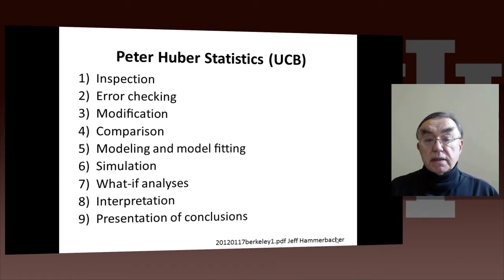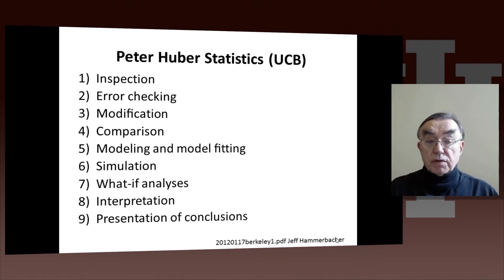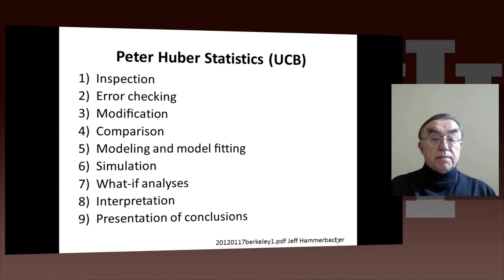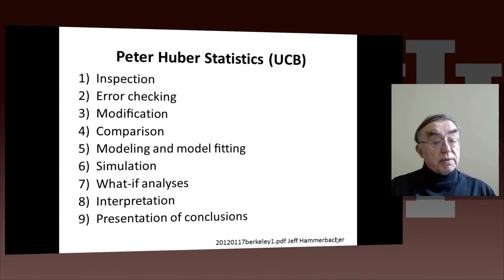Here's Peter Hubler, another statistics person from Berkeley. You need to inspect the data and curate it — that's error checking. Data is always full of errors, and you need to check as much as possible that there are no errors that will cause you to get the wrong answer. You need fault-tolerant algorithms. After checking for errors, you either discard the data or correct it. You need to compare what you're doing with what you did in the past, perhaps on smaller data sets. Then we need to build the model, and the model may have parameters, which means you have to fit the model.